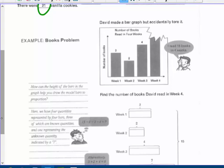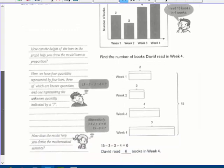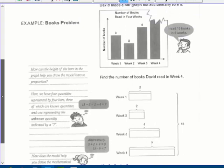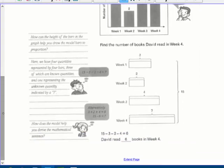Here's a books problem. So David made a bar graph but accidentally tore part of it off. Uh-oh. Well, find the number of books David read in week four. Hmm. How can the height of the bars help us? Well, we can see that in week one he read three. In week two he read two. In week four, week three he read four. And in week four, I don't know.